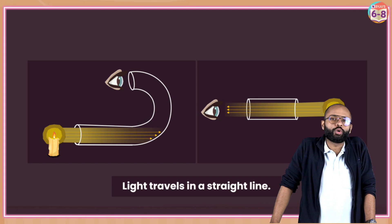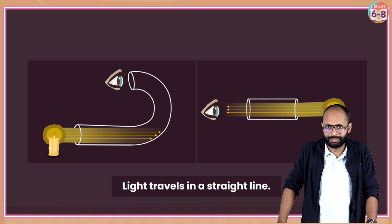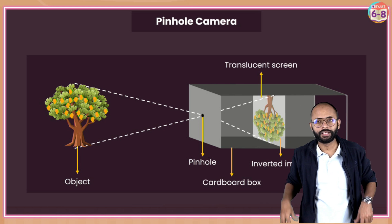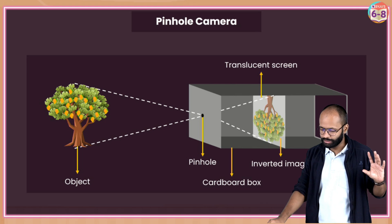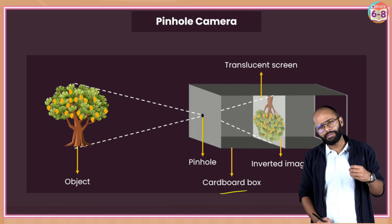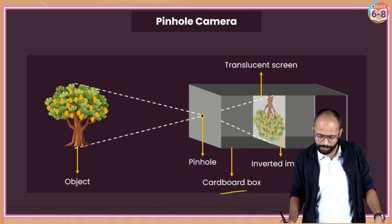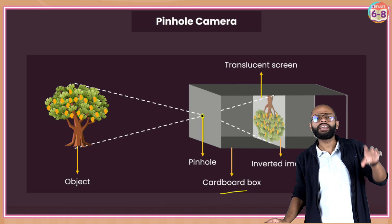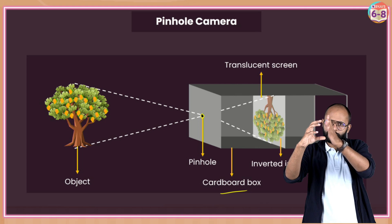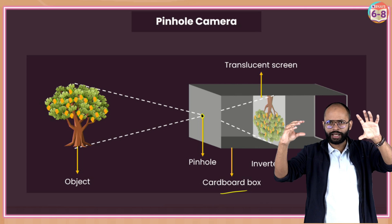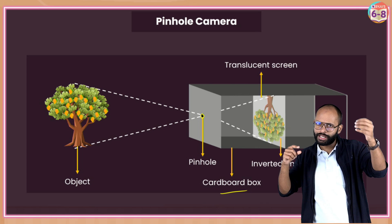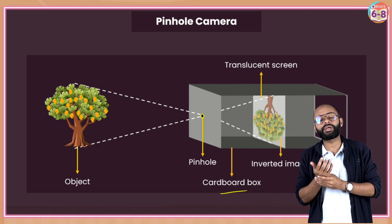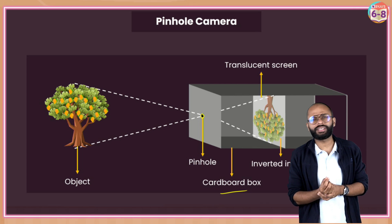This is the working principle behind the pinhole camera. It's a very simple camera - previously we used to call it camera obscura. What do you need? One cardboard box. Make a hole in the box and inside, put a translucent screen. Normally you have two cardboard boxes - the outside box has a hole, and the box inside has a screen on one side. The inner box can slide inside the bigger box. This is your simple setup of a pinhole camera.